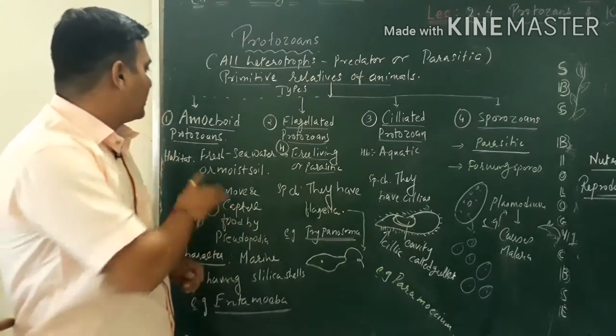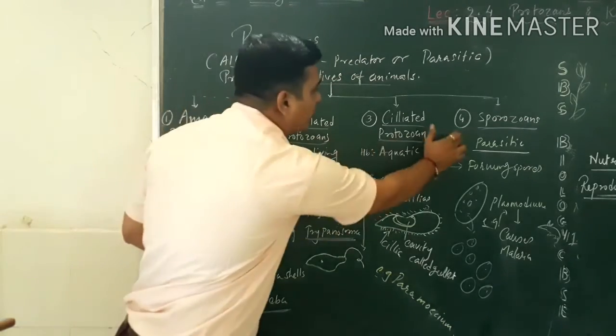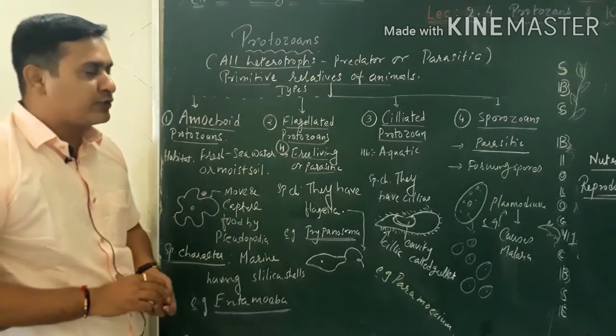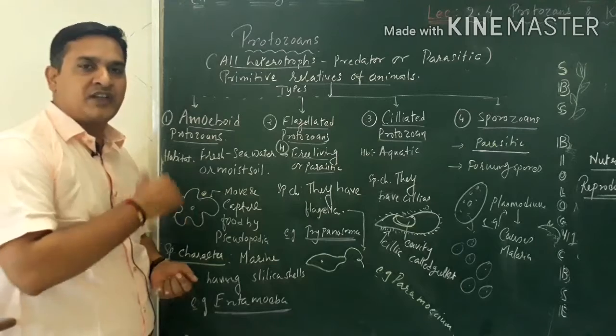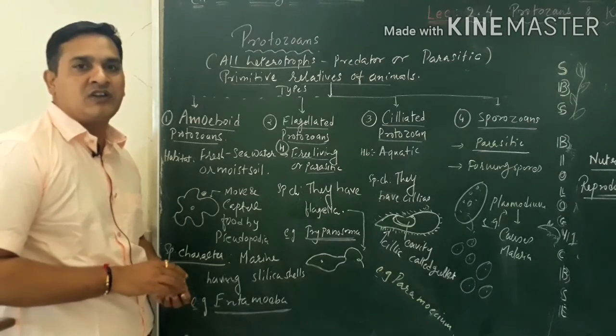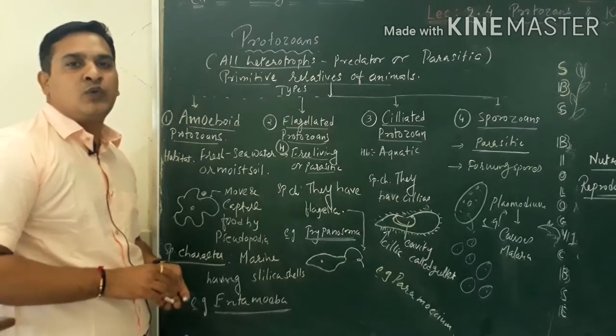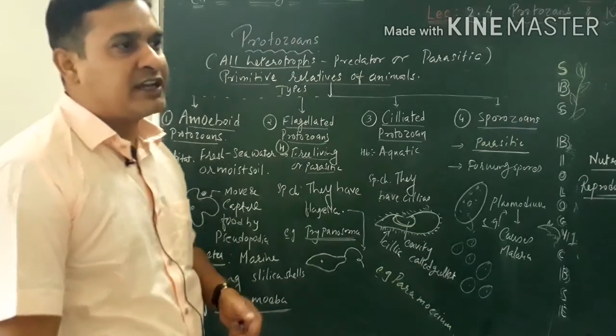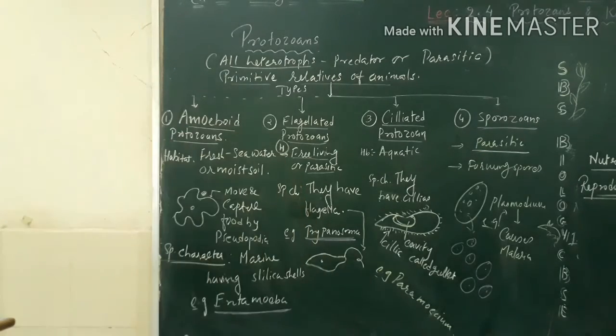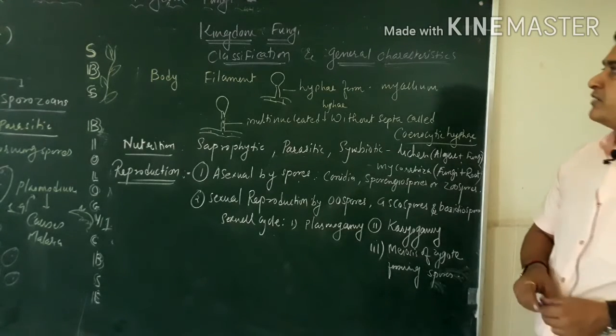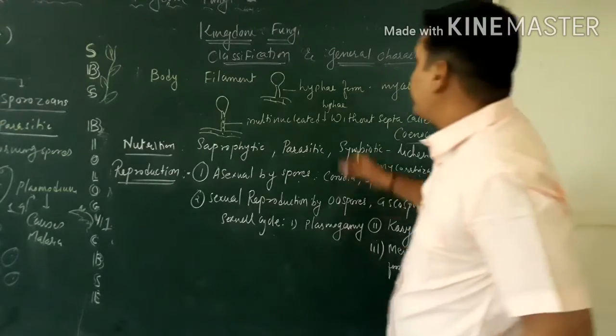So this is about one, two, three, and four, these are the different types of protozoans. Let's we understand, after the protozoans, let's we begin the kingdom Fungi and their salient features or general characteristics. Let's we see kingdom Fungi.